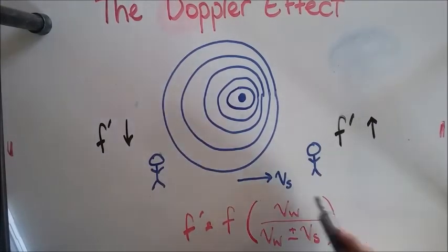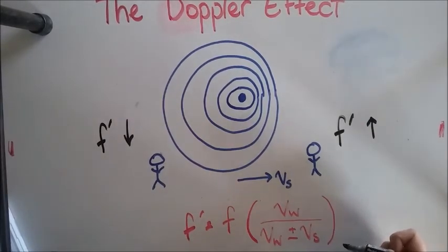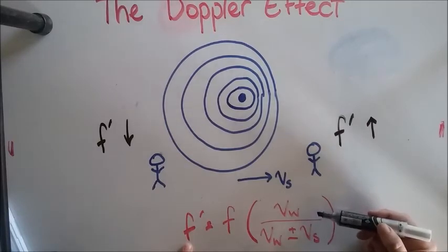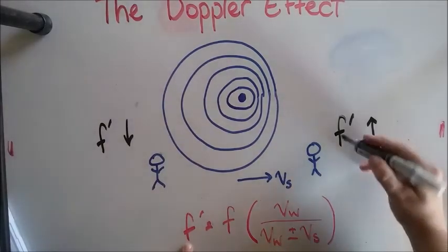So this here is either going to make this whole expression a little bit bigger than one or a little bit less than one. So if it's a little bit bigger than one, the apparent frequency will go up. That means if you want to see the apparent frequency go up, you would want this bottom line to be smaller.